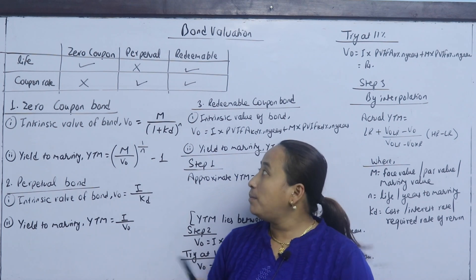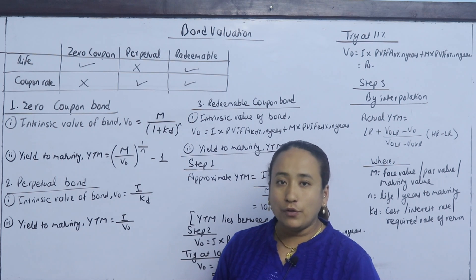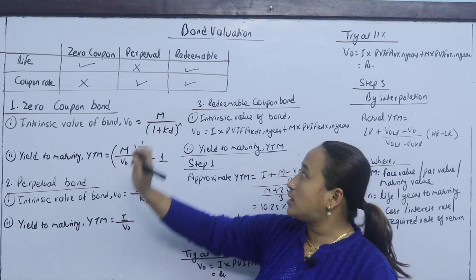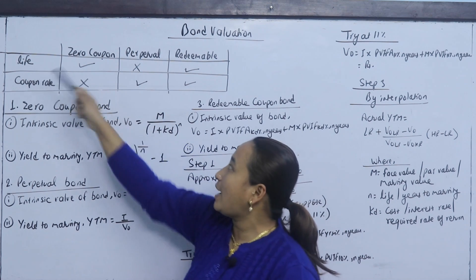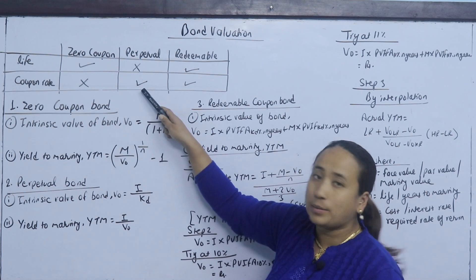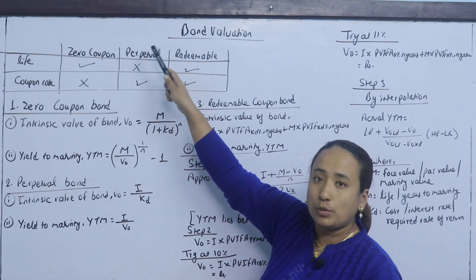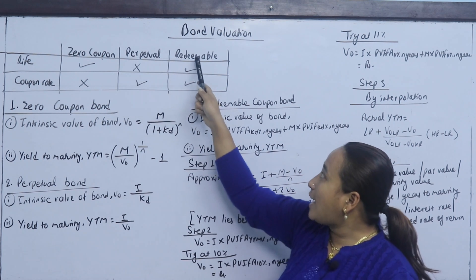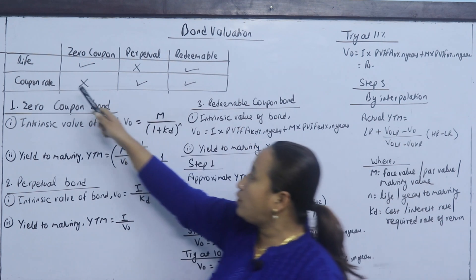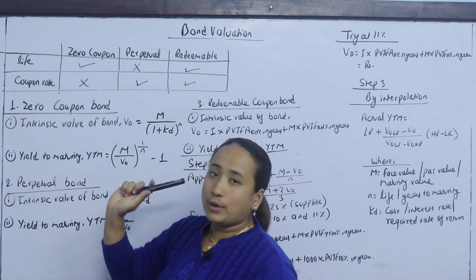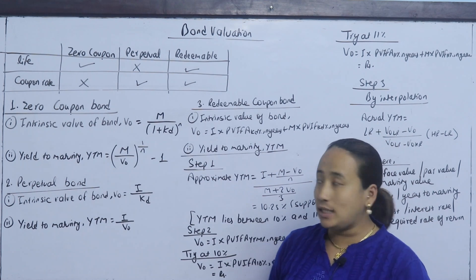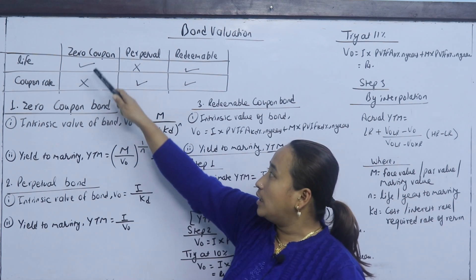For a perpetual bond, the life is not fixed. It is a perpetual bond, so there is no fixed life — only a coupon rate paid indefinitely. The last type is a redeemable bond, which has a fixed life and a coupon rate.